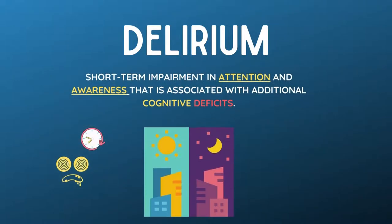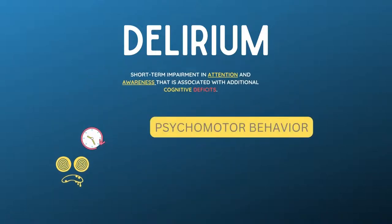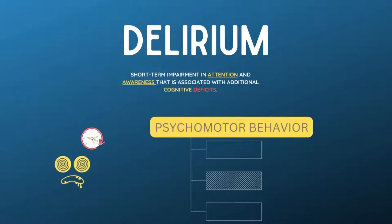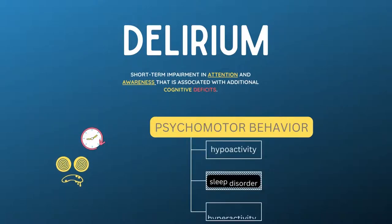It develops over a short period of time and fluctuates during the day. Clinically, the disorder is often characterized by psychomotor behavioral disturbances, such as hyperactivity or hypoactivity, and sleep disturbances.